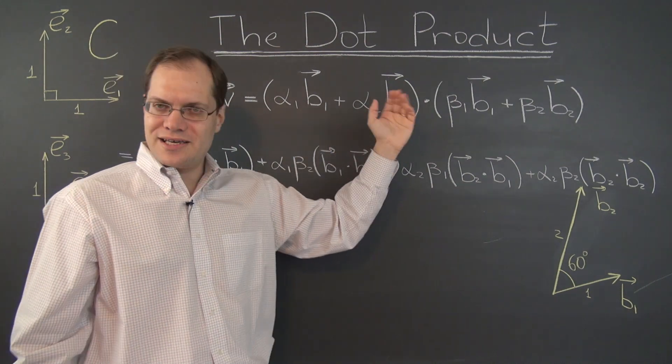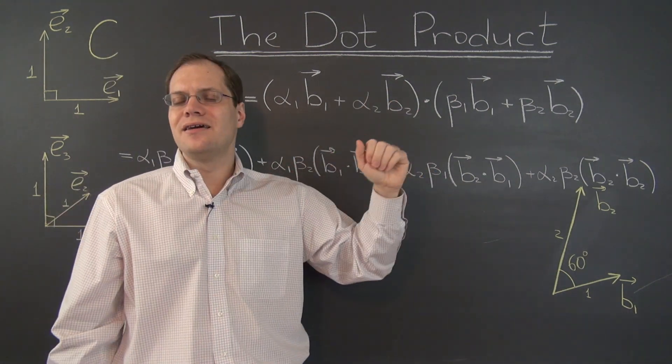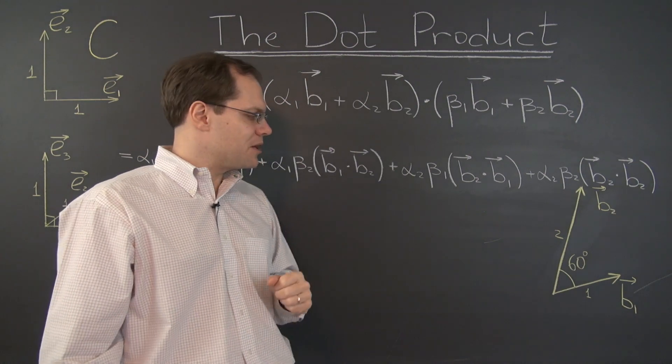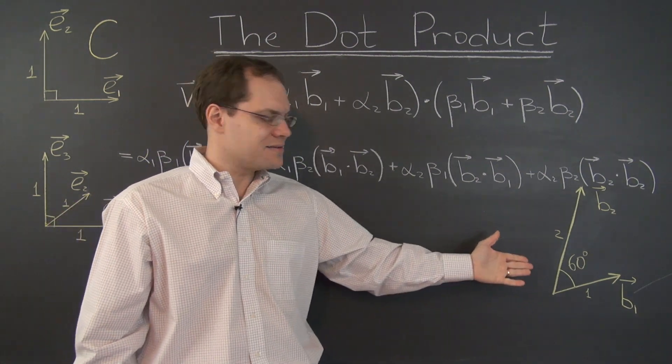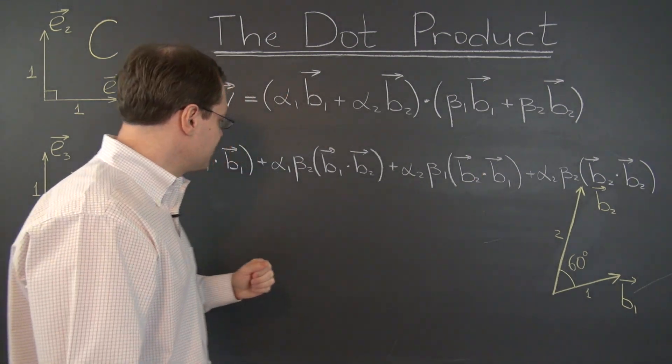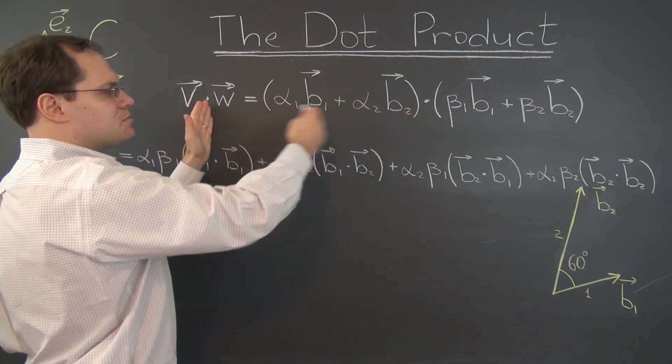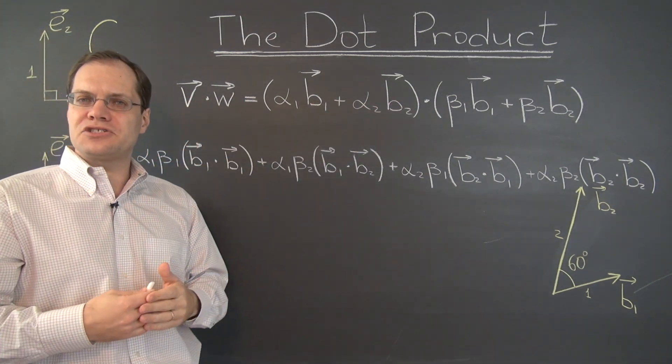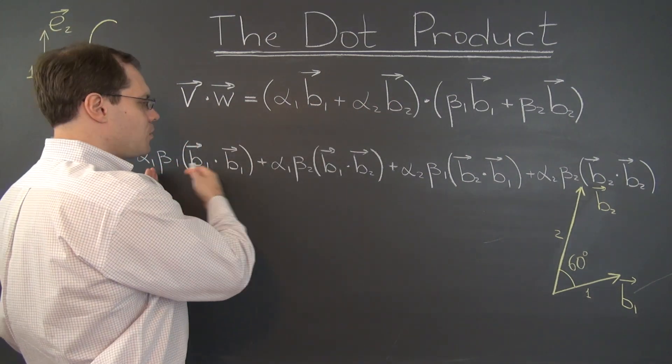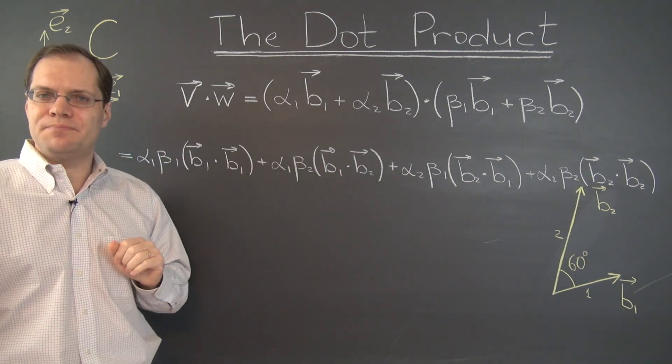And we can once again use the distributive law. We're right now not taking advantage of any of the special properties of this basis. Not that it has too many special properties. And when we foil this expression out by a repeated application of the distributive law, we'll end up with these four terms just like we did before.